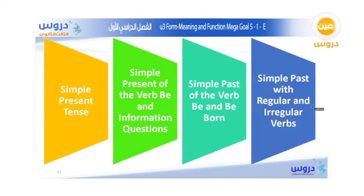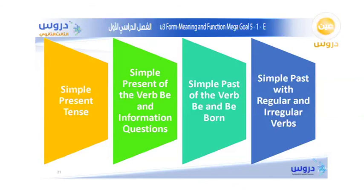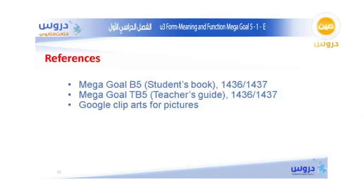So here is the summary of today's lesson. We talked about the simple past with regular and irregular verbs, the simple past of the verb be and 'be born,' the simple present of the verb to be and information questions, and the simple present tense.